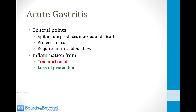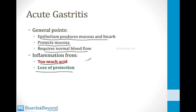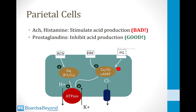For Step 1 of the boards, they will be much more likely to ask you if you understand the mechanism by which the mucosa becomes inflamed. The epithelium produces mucus and bicarb to protect the mucosa, and normal blood flow to the stomach is required for this. Inflammation occurs when too much acid is produced or when mucosal protection is lost. Recall that acetylcholine, histamine, and prostaglandins all influence acid secretion via parietal cells.